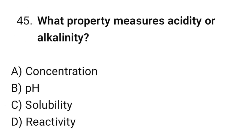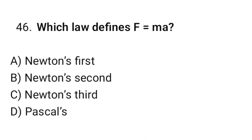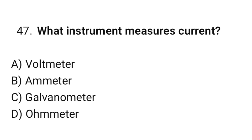Question number 45: What property measures acidity or alkalinity? The correct option is B — pH. Question number 46: Which law defines F = MA? The correct option is B — Newton's second law. Question number 47: What instrument measures current? The correct option is B — Ammeter.